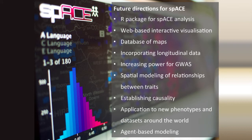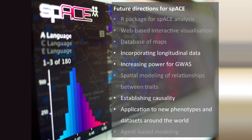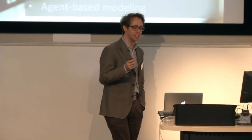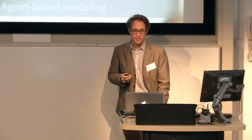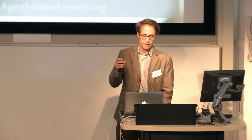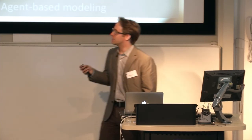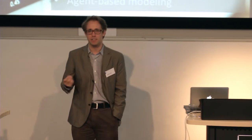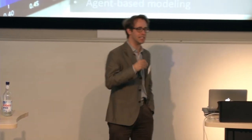These are some of the directions I'm going to take SPACE over the next few years. One question is how these maps change through development — we initially took a snapshot when twins were 12 years old, but we have data across 20 years. Another is how we can use this information to increase power to detect individual genetic variants in genome-wide association studies (GWAS). The example I've shown is correlational, not necessarily causal, so we also want to incorporate causal data. And we've been invited to apply this method to datasets across the world, so it'll be fascinating to see how these findings hold up across different countries.